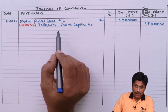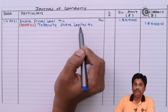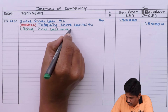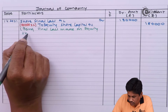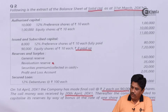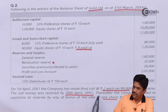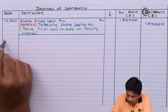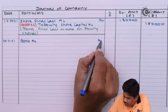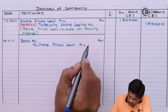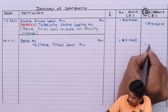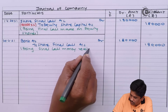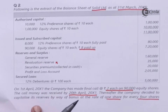Entry for making the final call: Share Final Call Account debit to Equity Share Capital Account — being final call made on equity shares. Now the question says call money was received by 20th April 2000 X1, so for receiving the call money, entry will be: Bank Account debit to Share Final Call Account — being final call money received.